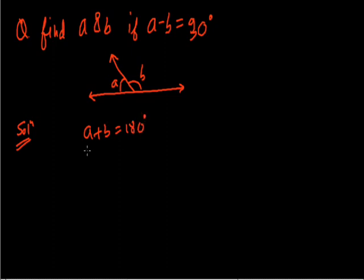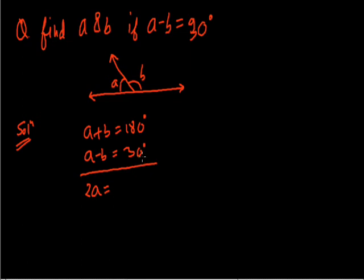In the question it is given that A minus B equals 30 degrees. When we add these two equations, B is cancelled. A plus A gives us twice of A, which equals 180 plus 30, that is 210. And the value of A is 210 divided by 2, that is 105 degrees. So the value of A is 105.